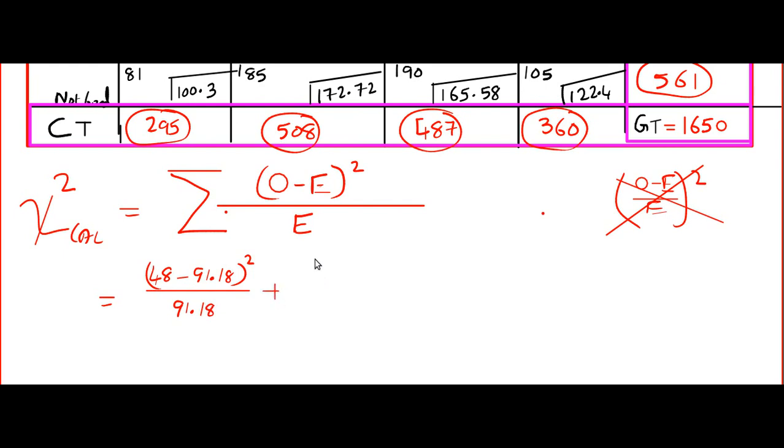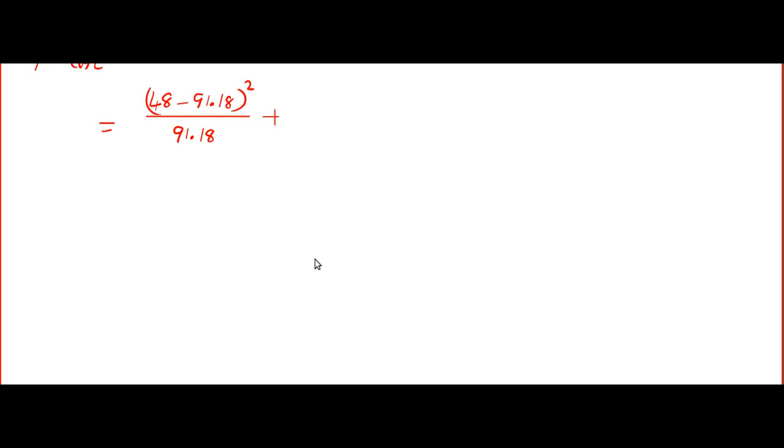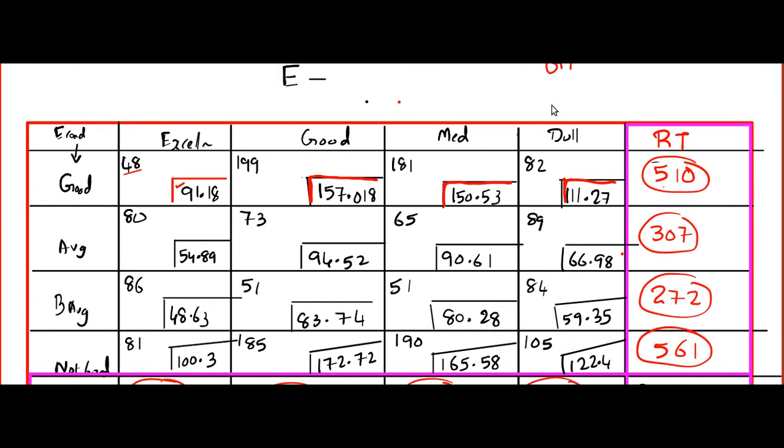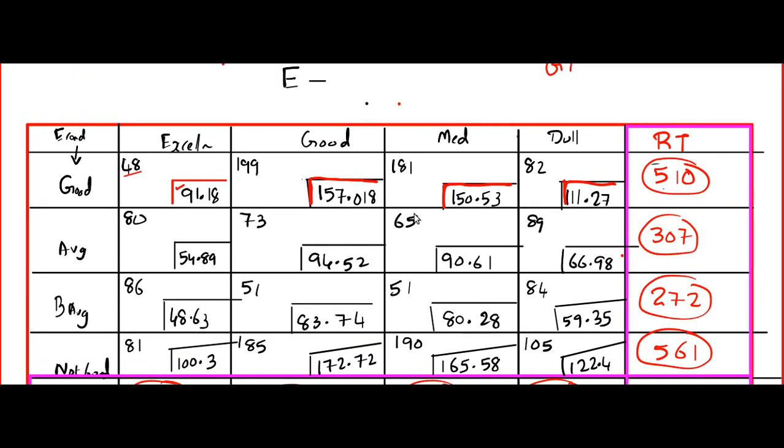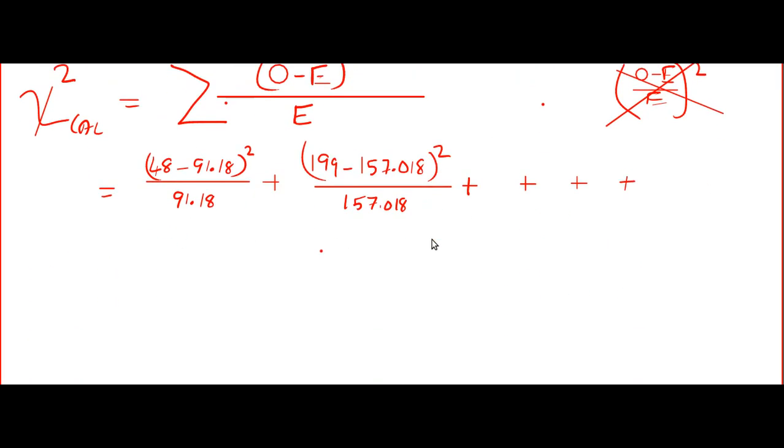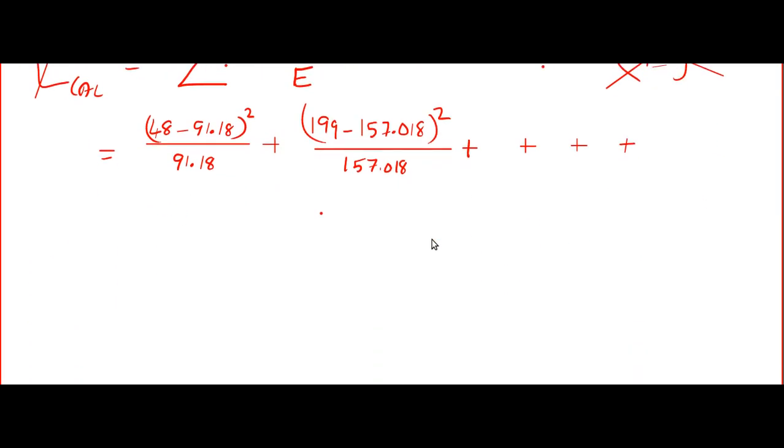I will give you one example what to do. This is O. This is E. So, I write 48. I will write like this. 48 minus 91.18. The whole squared, the whole divided by 91.18. Plus, I look at the next value, 199, 157. So, I get 199 minus 157.018, the whole square, by 157.018. Like this, you do plus, plus, plus. There are 16 terms like this. 1, 2, 3, 4, 5, 6, 7, 8, 9, 10, 11, 12, up to 16 terms.